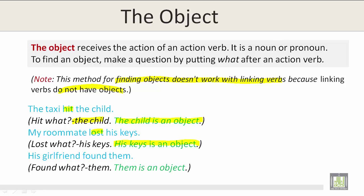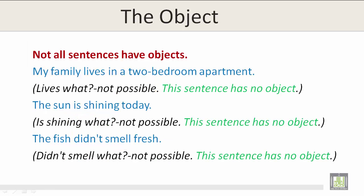His girlfriend found them — found what? Them. Them is an object. Not all sentences have objects. My family lives in a two-bedroom apartment — lives what? This is not possible. This sentence has no object.